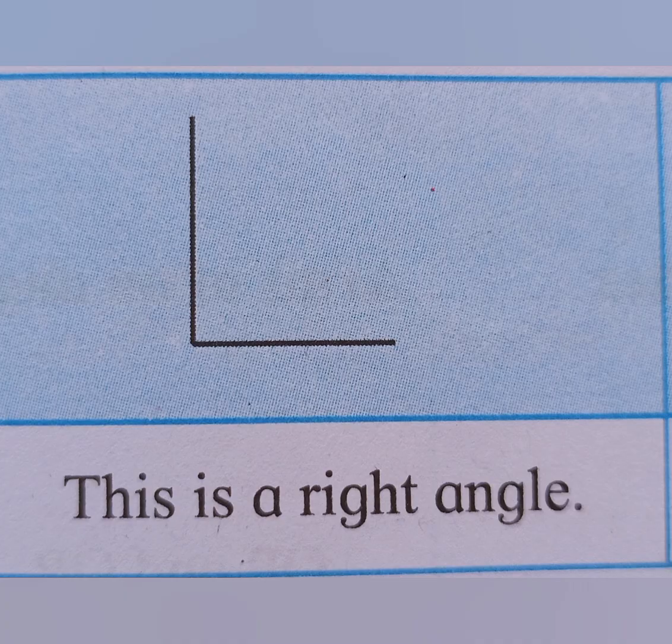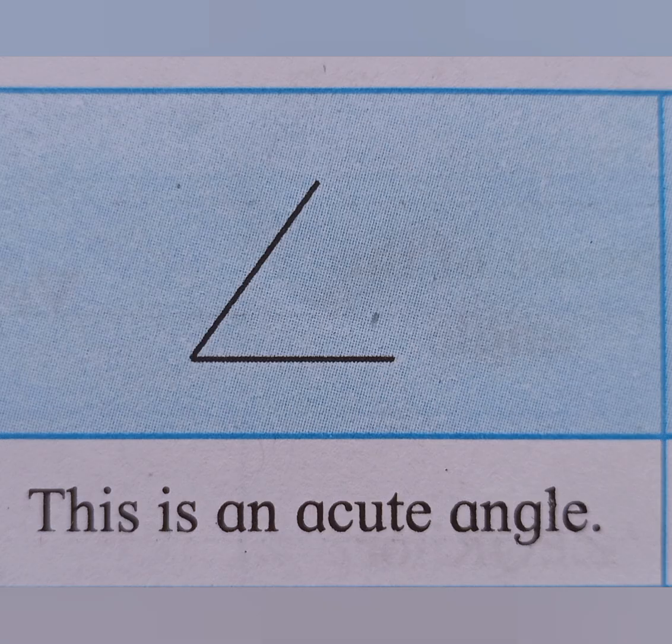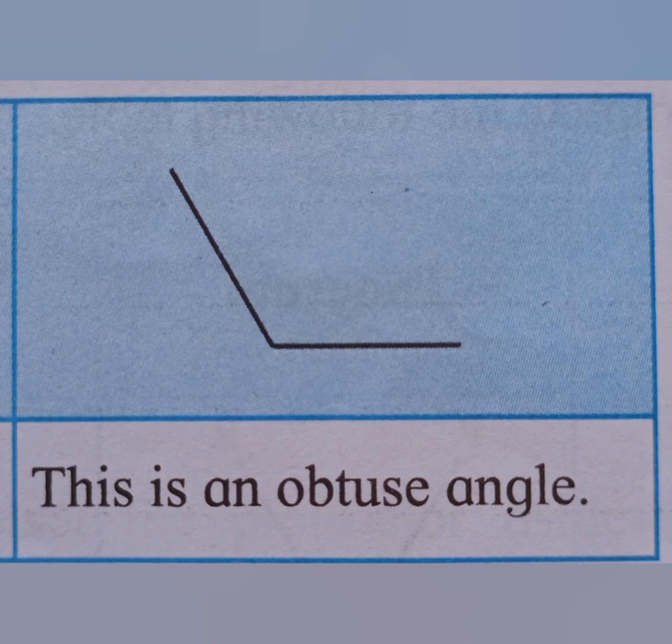We can see: first, this is a right angle. This is an acute angle. This is an obtuse angle.